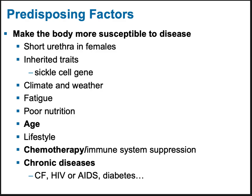Some of these predisposing factors are genetic, some are male versus female, and some are lifestyle choices. For example, the short urethra in females compared to males is why females are much more likely to develop UTIs — urinary tract infections. UTIs are very common in women and very uncommon in males.